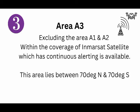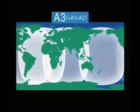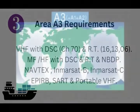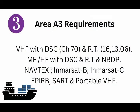Sea Area A3 is an area excluding sea area A1 and A2, but within the coverage of an Inmarsat geostationary satellite in which continuous alerting is available. Sea area A3 usually lies between 76 degrees North and 76 degrees South, excluding areas A1 and A2. Carriage requirements are: VHF with DSC and radio telephony, MF with DSC and radio telephony, Inmarsat-B, Inmarsat-C, Fleet 77, HF with DSC, radio telephony and NBDP, NAVTEX receivers, EPIRB, SART, and portable walkie-talkies or VHFs.